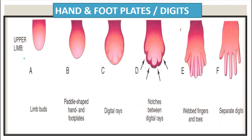This picture shows different developmental stages of the limb. A shows limb buds; B shows development into paddle-shaped hand and foot plates; C is where digital rays and fingers begin to form; D is where notches between the digit rays appear; E shows webbed fingers and toes; and finally there are separate digits.